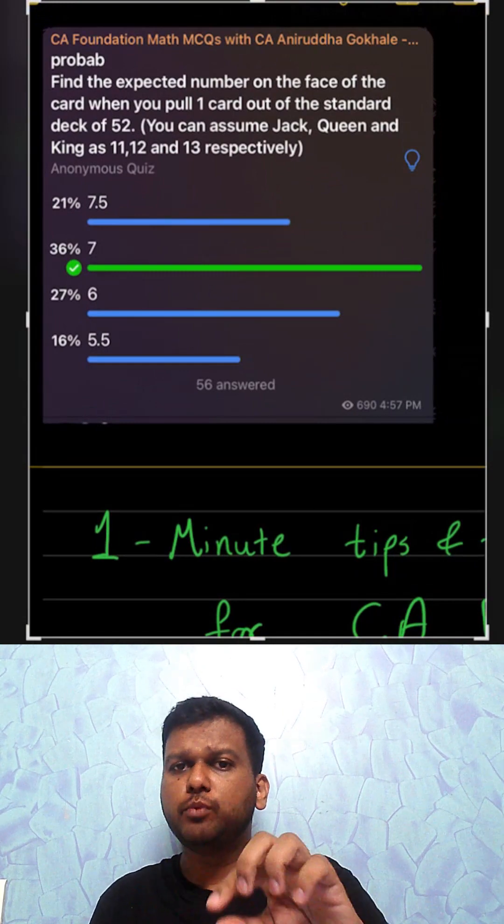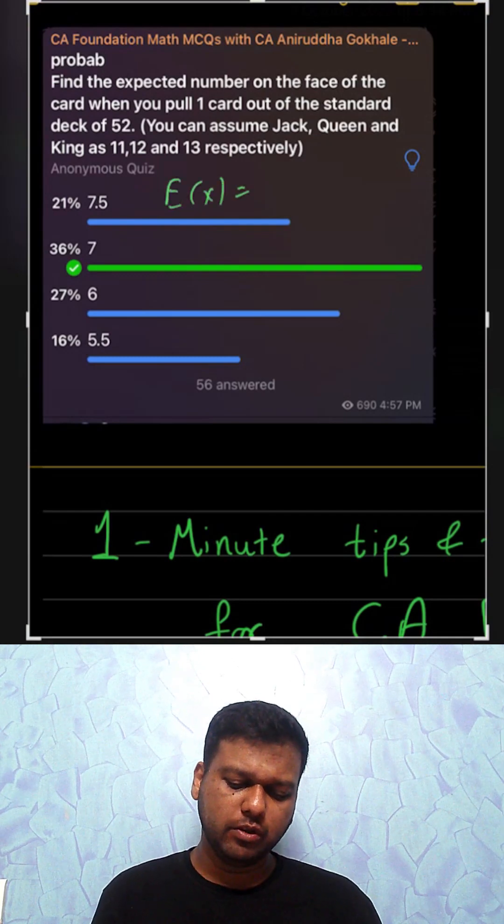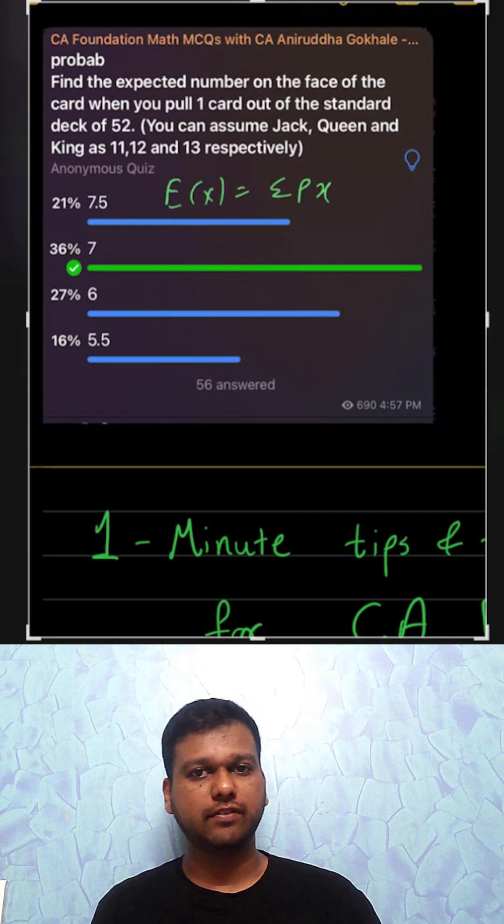Find expected number on face of the card when you pull one card out of standard deck of 52. What is expected value? Summation of probability into x values.